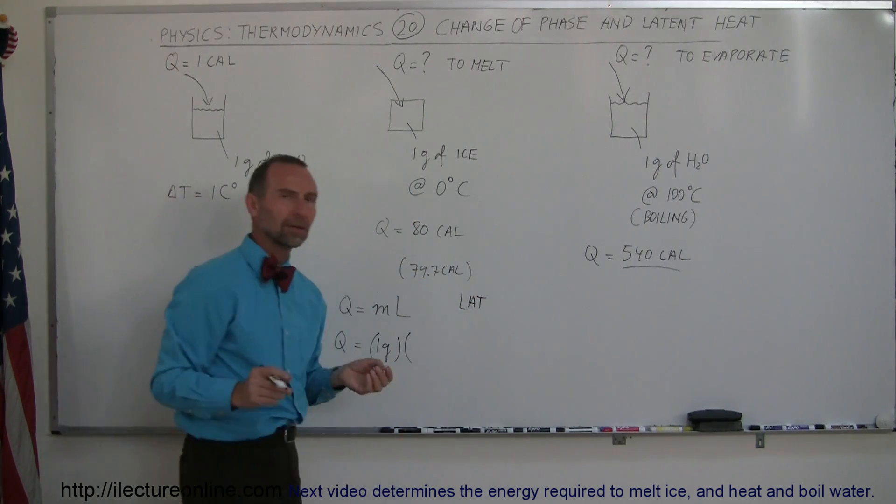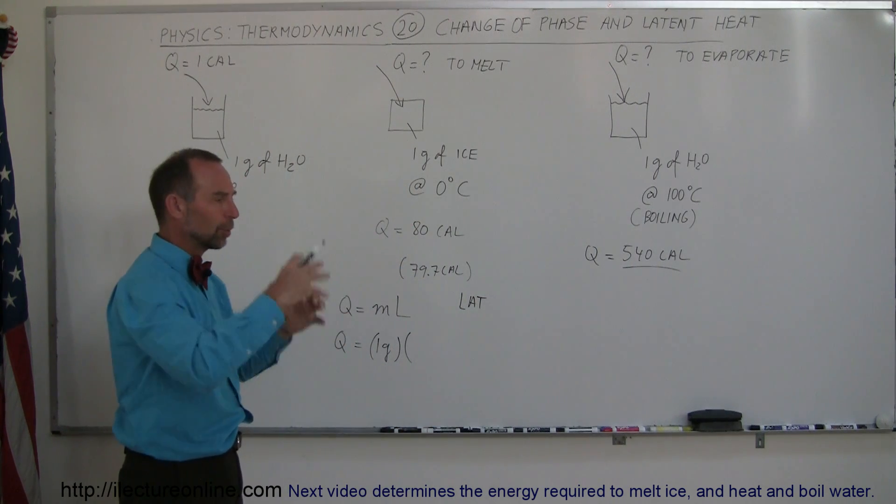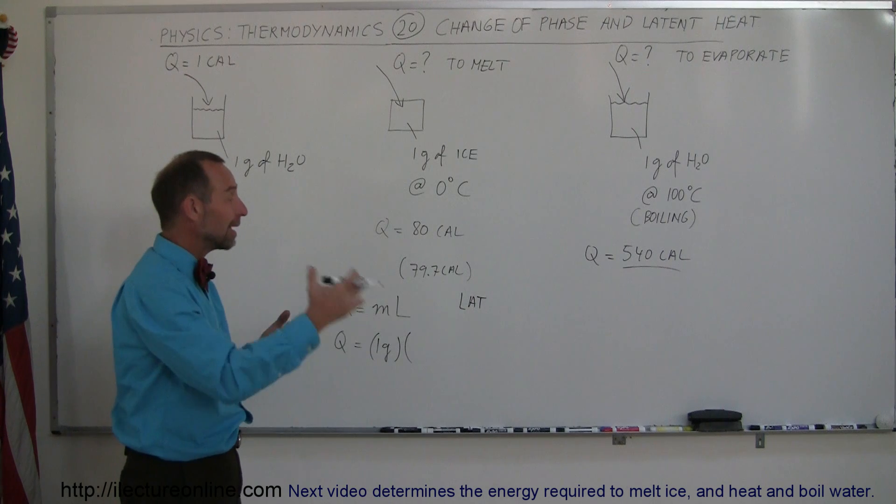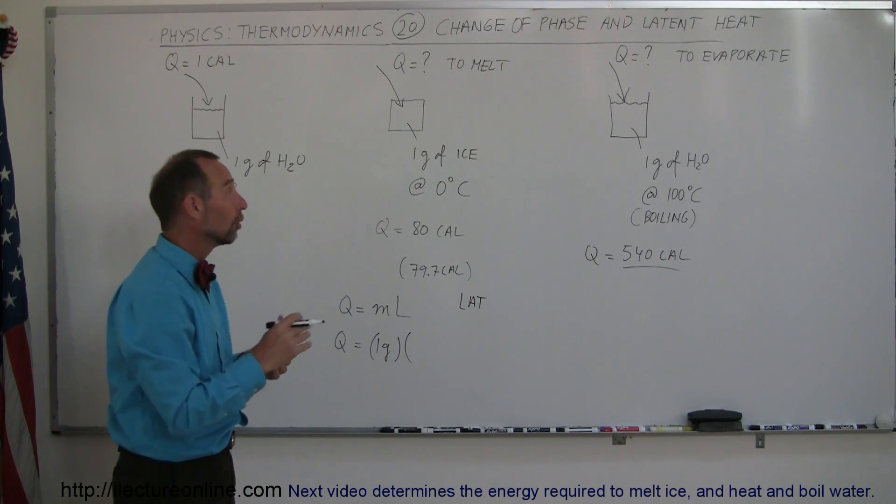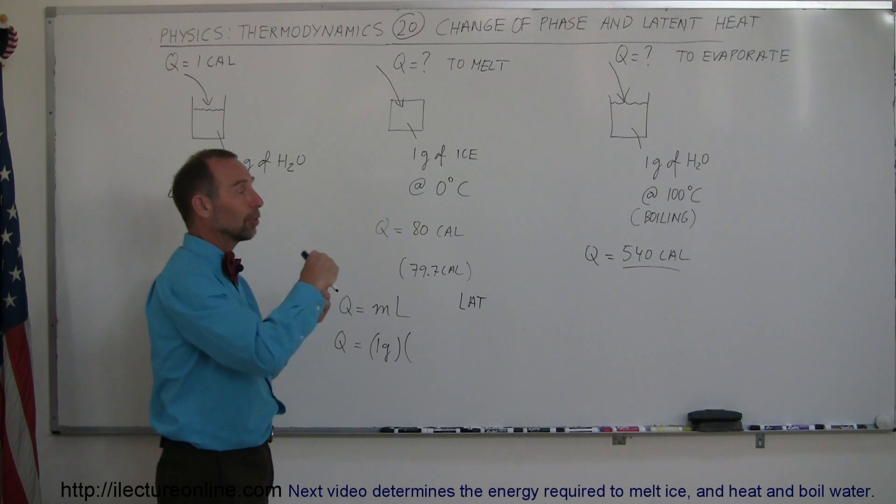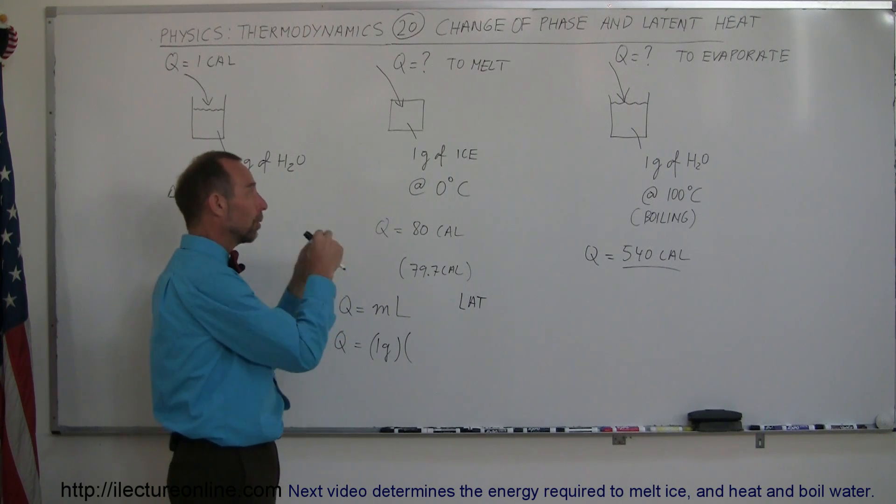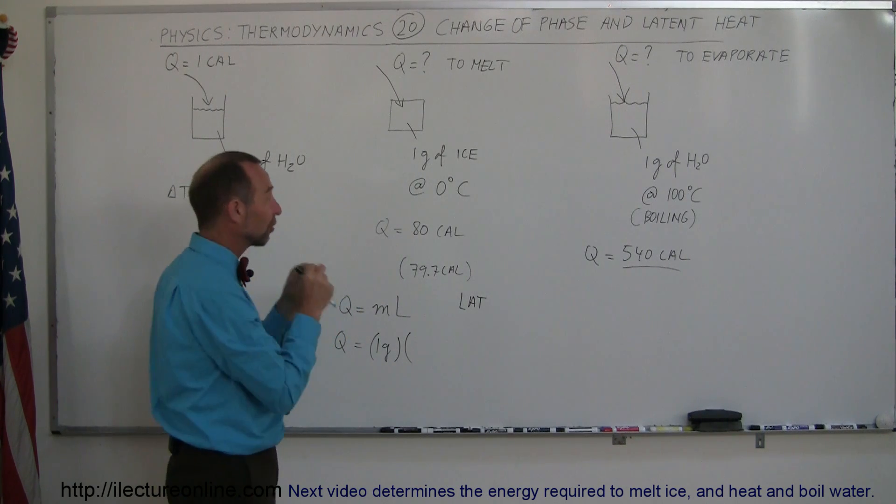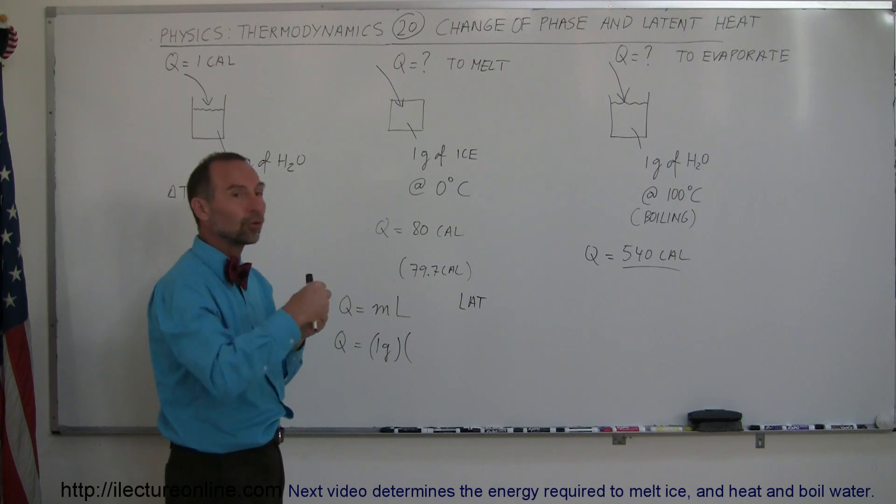We call this latent heat of fusion. You might say, wait a minute, fusing means you take a liquid and turn it into a solid. That's correct, but it's the same energy required to go both ways. If you take one gram of water and completely freeze it to a block of ice at zero degrees centigrade, you would have to take away 80 calories of heat.